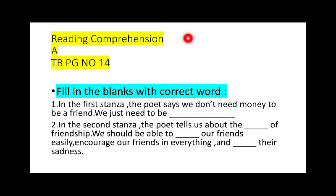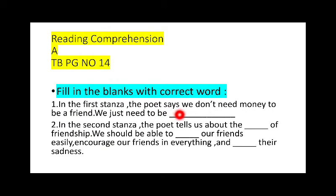Next, we are going to learn some book back exercises from your textbook page number 40. Fill in the blanks with correct words. First one: in the first stanza, the poet says we don't need money to be a friend — we just need to be blank. I think you have guessed something, right?